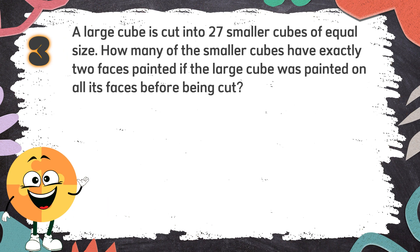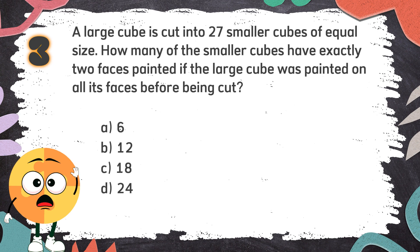Number 3: A large cube is cut into 27 smaller cubes of equal size. How many of the smaller cubes have exactly two faces painted, if the large cube was painted on all its faces before being cut? The choices are: A. 6, B. 12, C. 18, D. 24.